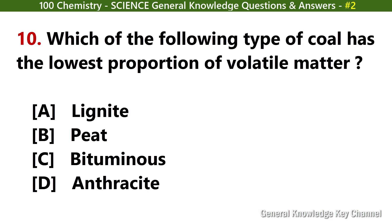Which of the following types of coal has the lowest proportion of volatile matter? Answer D: Anthracite.